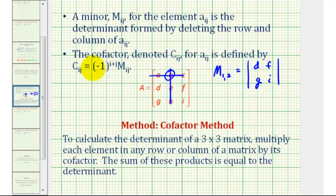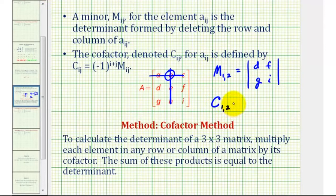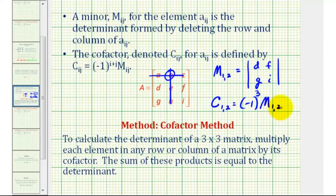Next, the cofactor for any element, using capital C, is equal to negative one raised to the power of i plus j, where i is the row of the element and j is the column of the element, times its minor. So if we wanted the cofactor of element b, which is in row one column two, we would have C sub one comma two equals negative one raised to the power of one plus two, which is to the third power, times its minor M sub one comma two.